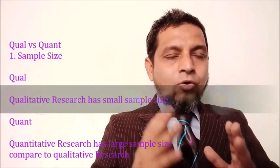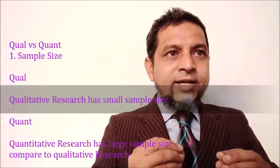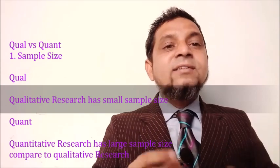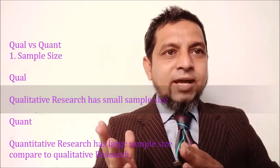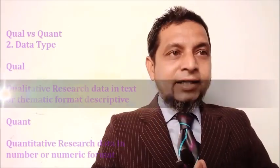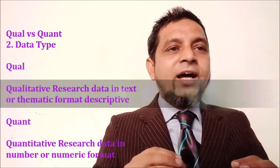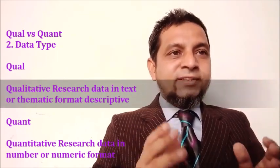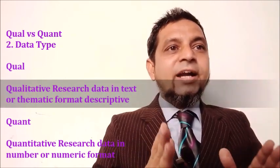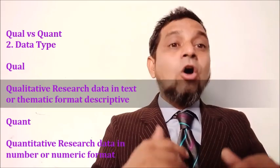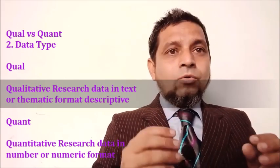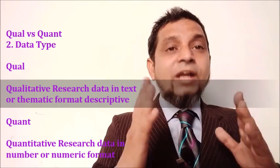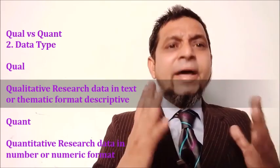Point number one: sample size. Qualitative research has a small sample size, whereas quantitative research has a large sample size. Point number two: data type. Qualitative research data is in text or thematic, descriptive format, while quantitative research data is in the form of numbers or numeric format.